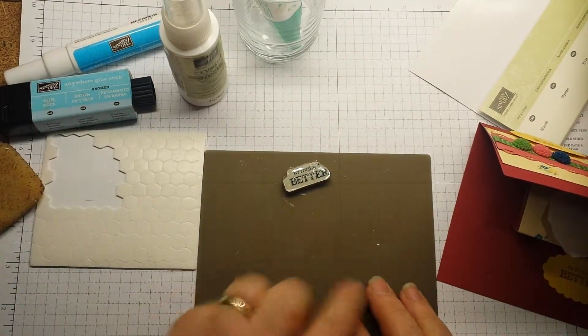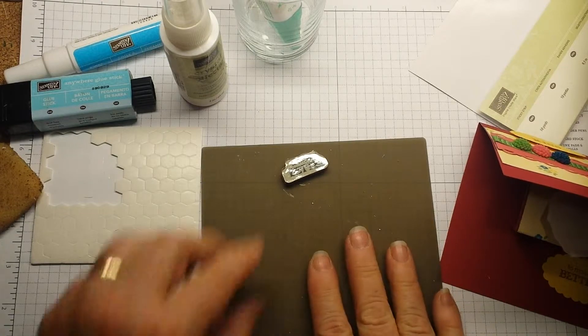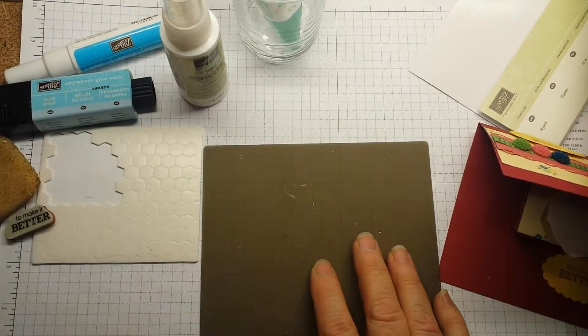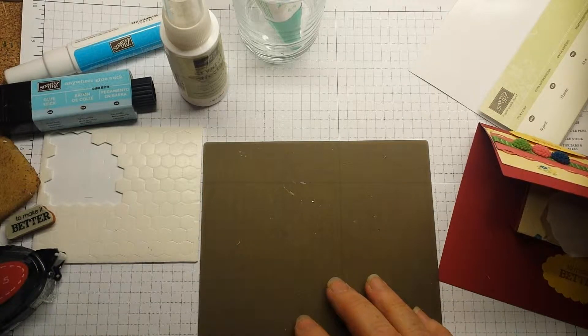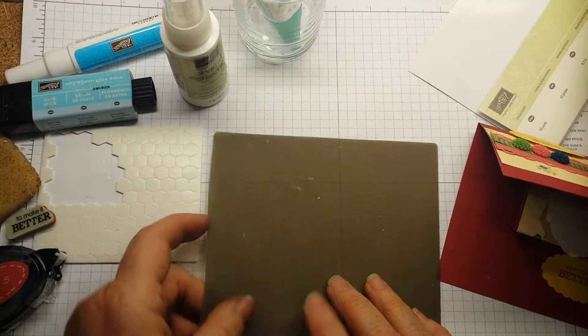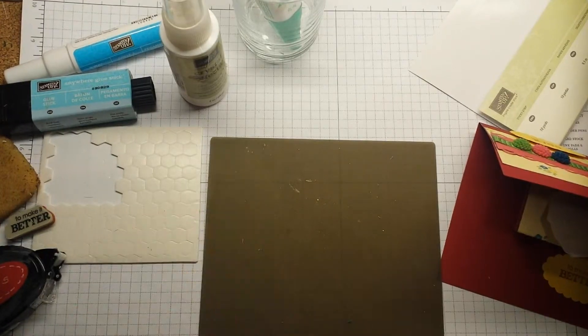Another adhesive tip that you might have seen me use is the silicone mat. And especially when I'm gluing some small things with maybe snail or other adhesives and I don't want to make a mess, I will put my small item on the silicone mat.